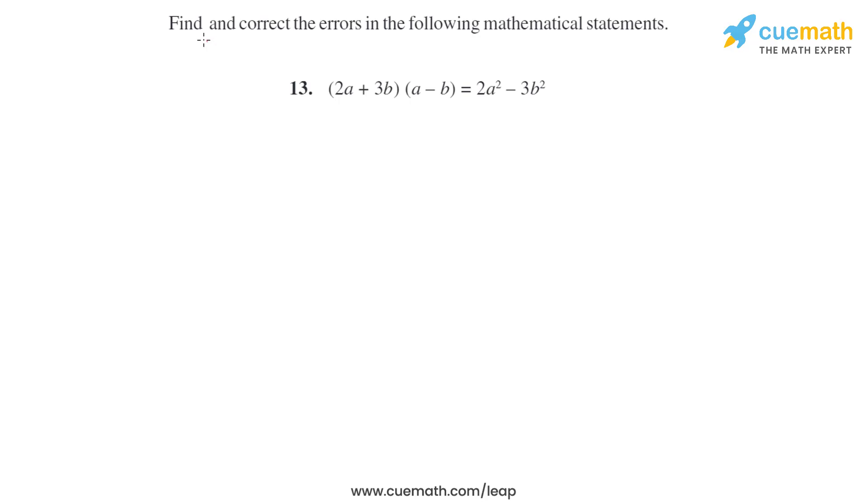Question 13: We have to find and correct the error. It is given (2a + 3b)(a - b) = 2a² - 3b². Let's check it. 2a plus 3b into a minus b.